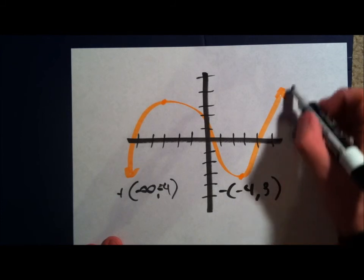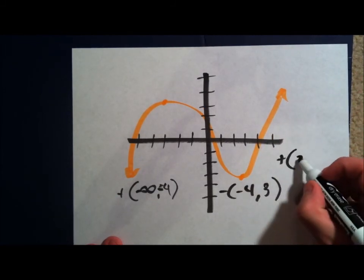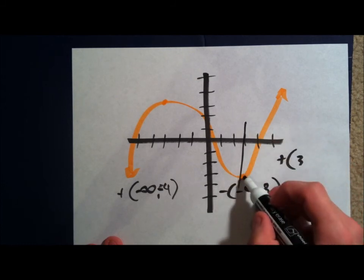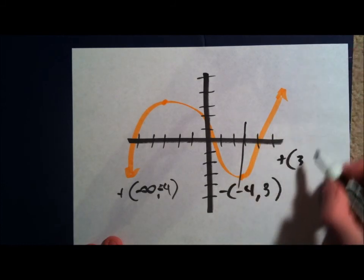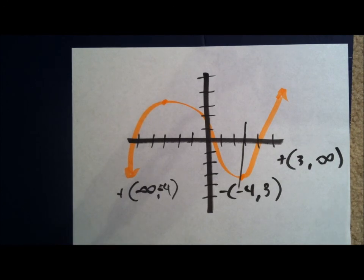Then, starting at positive three. We're going to show more positive. A positive increase. Starting at point three. Which is right here. And we're going to go all the way up to infinity. There we are. Simple. The end.